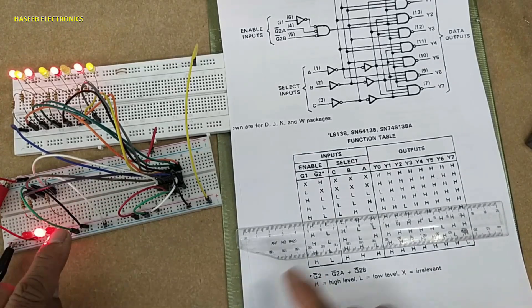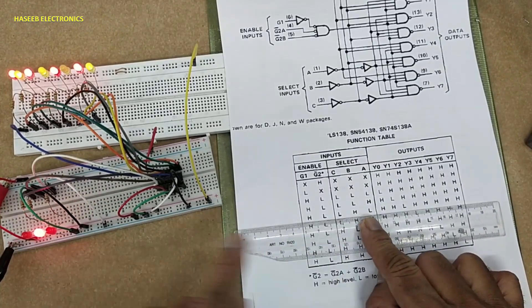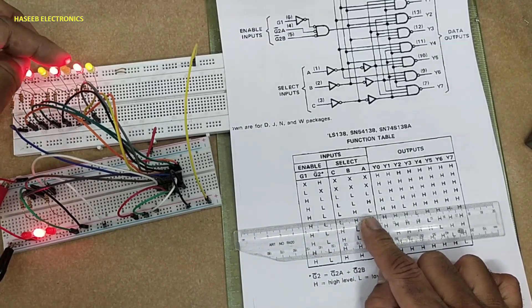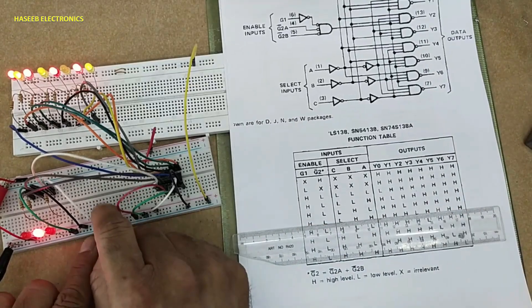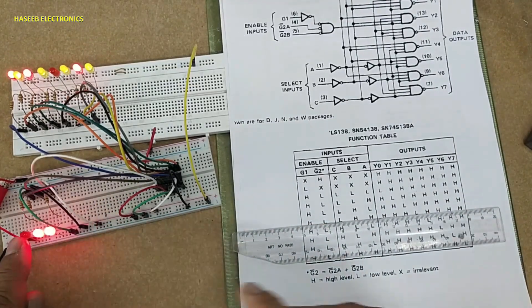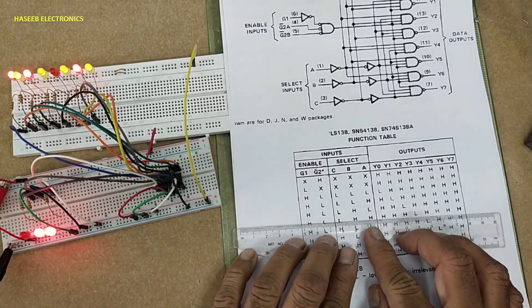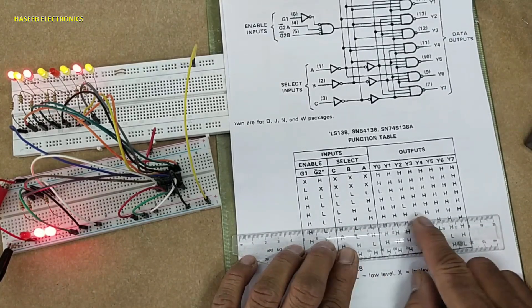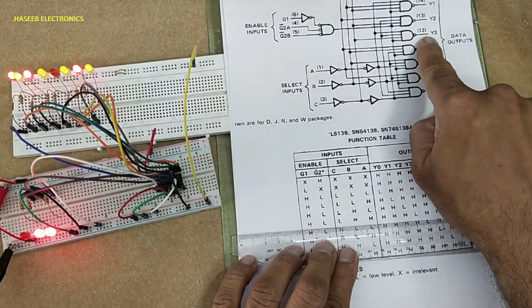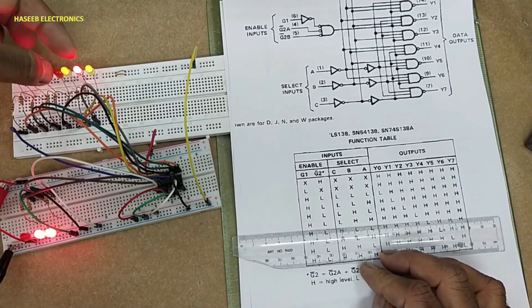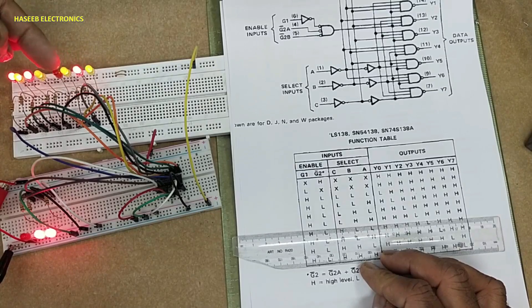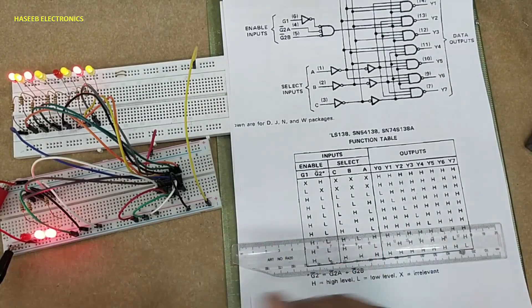Low, high, low, as mentioned in the table. Y2 is active now. Low, high, high—Y3 is active, pin number 12. This is Y3: Y0, Y1, Y2, Y3. Then high, low, low for Y4.